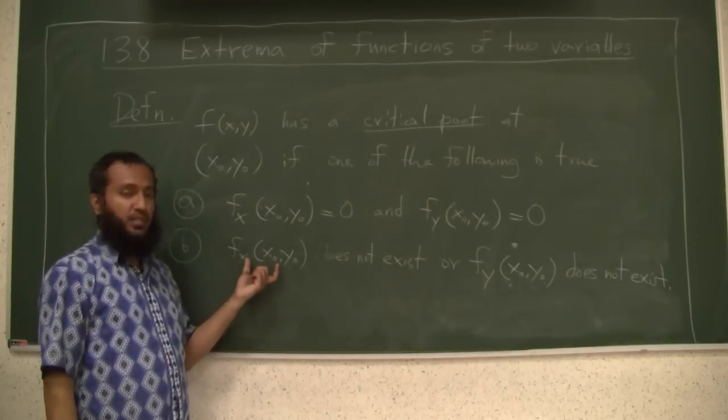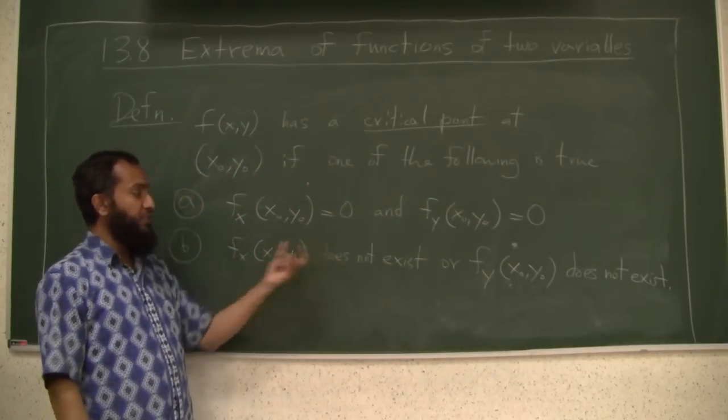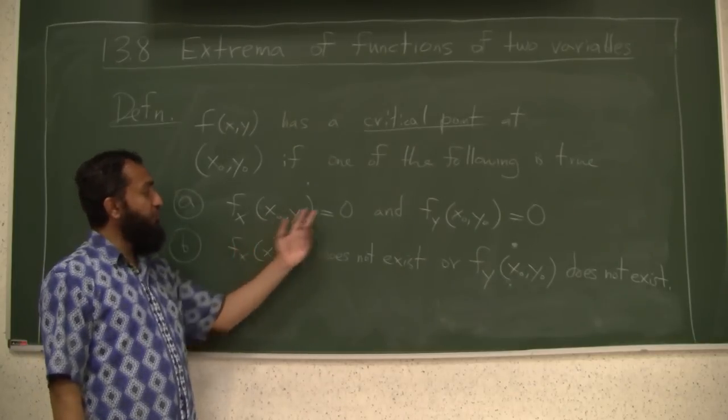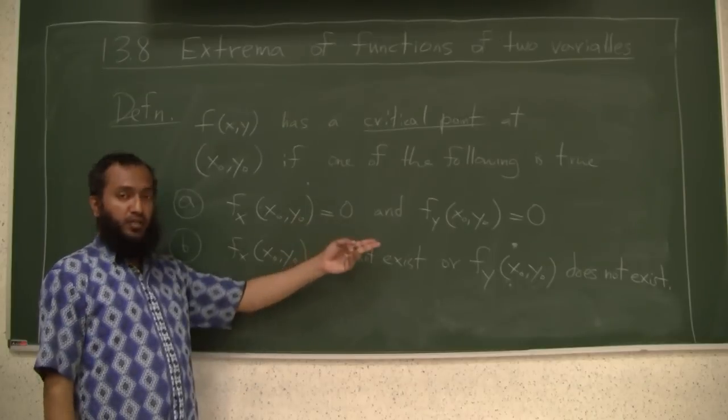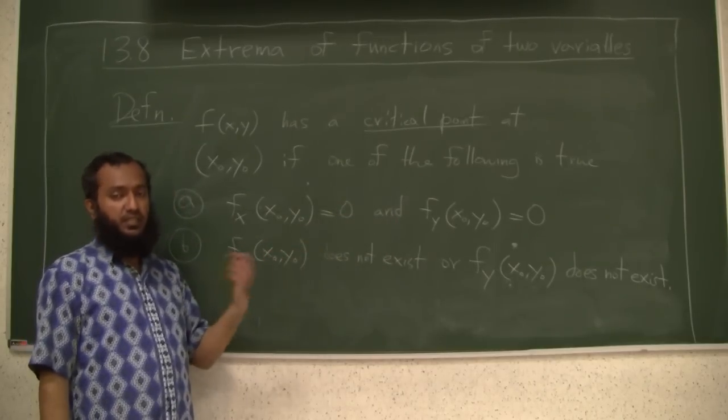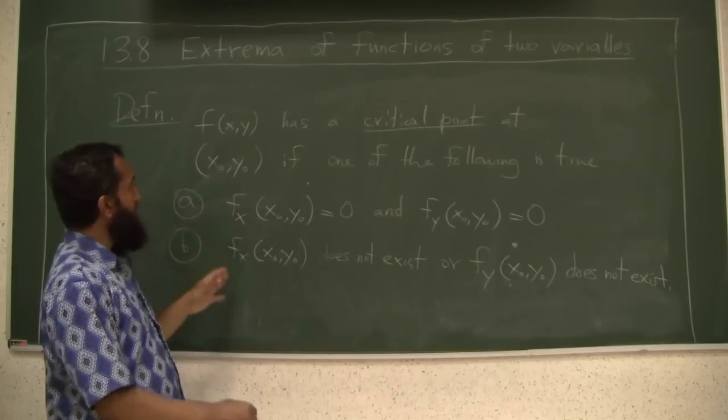Meaning either this partial does not exist or that, or even both partials do not exist. So if it is going to be a smooth point then you can have both partials existing and they will be equal to 0, or at least one of the partials does not exist. So this is the definition of critical point.